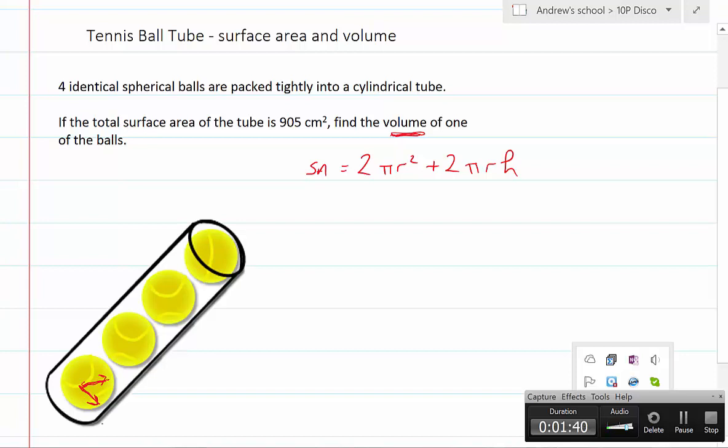But what about the height of the cylinder? Well, the height of the cylinder occupies four balls and each ball has a total distance across of the diameter which is twice the radius, so this is 4 times twice the radius, in other words, 8 times the radius.